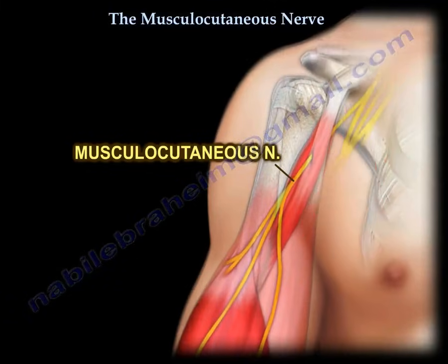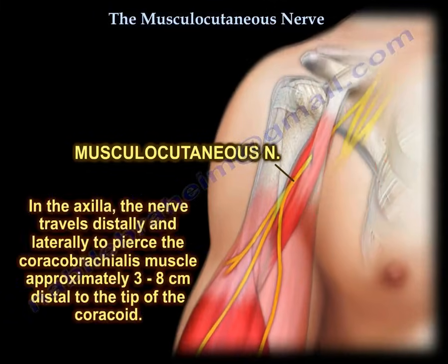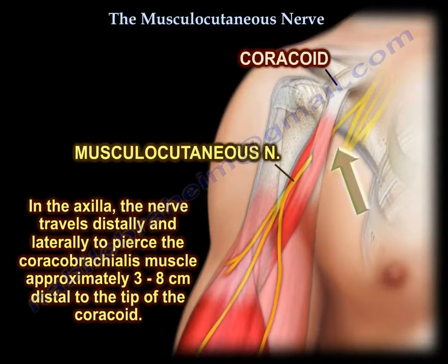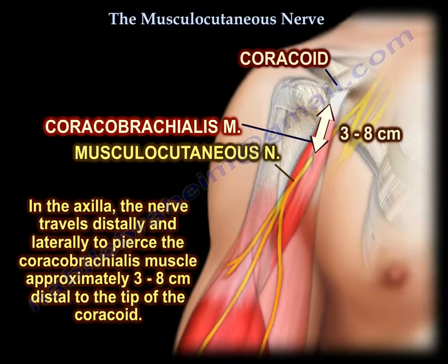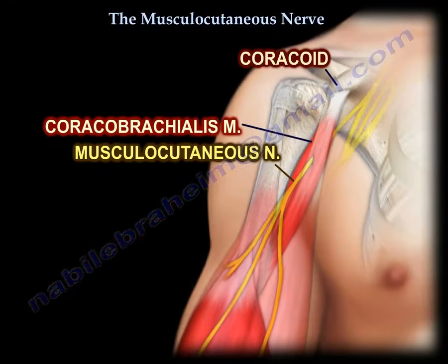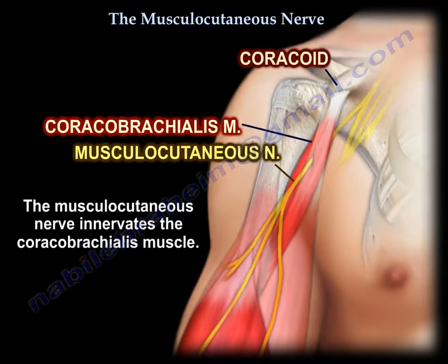It lies lateral to the axillary artery and starts at the lower border of pectoralis minor. In the axilla, the nerve travels distally and laterally to pierce the coracobrachialis muscle, approximately 3 to 8 centimeters distal to the tip of the coracoid. The nerve innervates the coracobrachialis muscle.